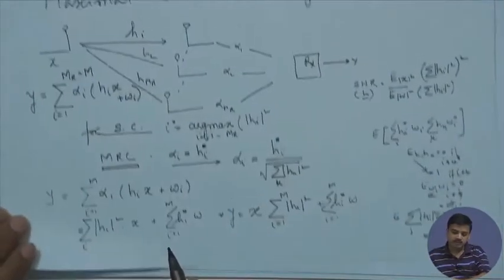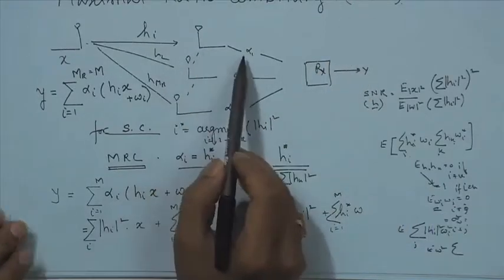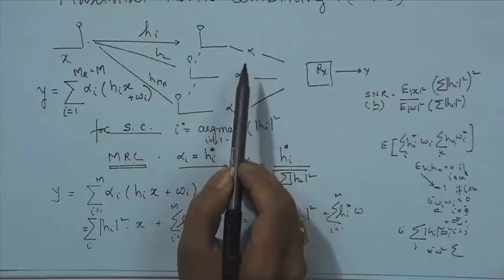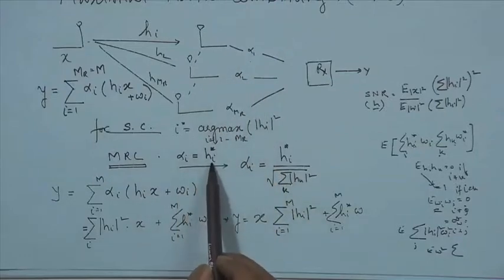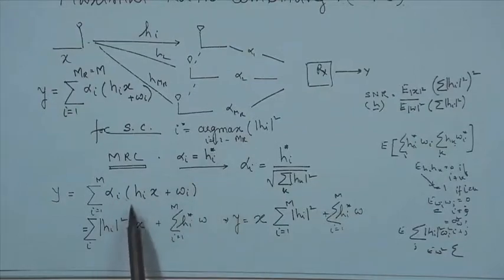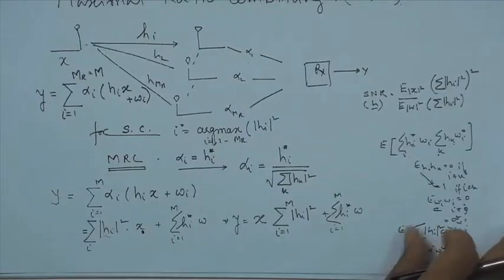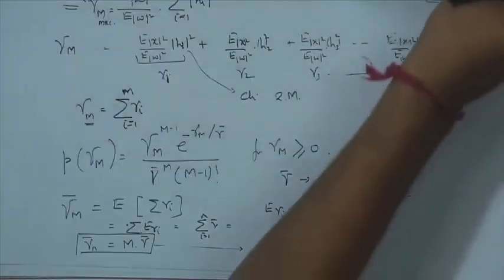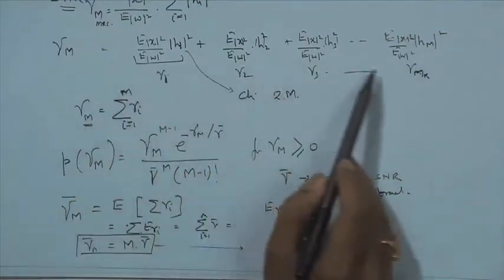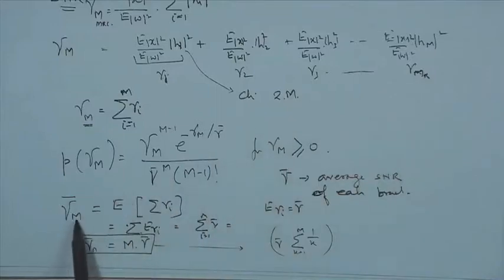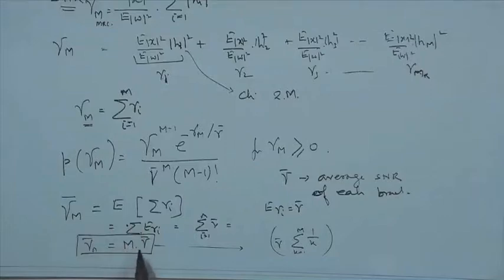This technique — maximal ratio combining — puts weights onto each of the branches proportional to the channel strength, using the H conjugate so that when multiplied we get |H|². This leads to the result that the SNR equals the sum of SNRs of individual branches, so the average SNR is M times the average SNR of any one branch. This is a huge potential gain.